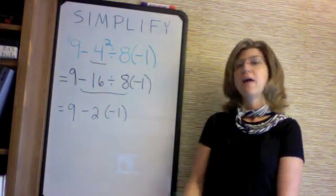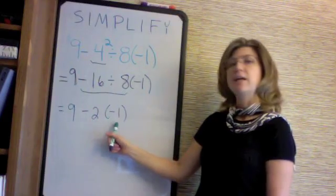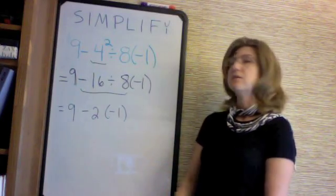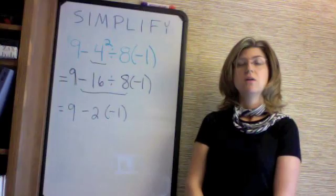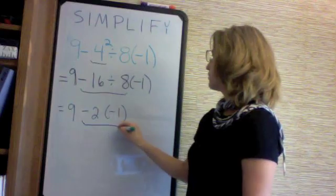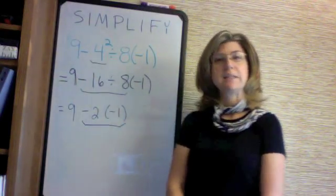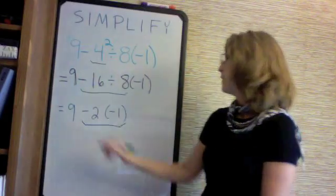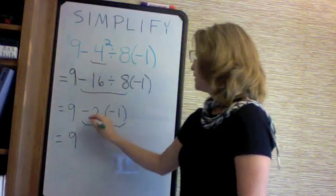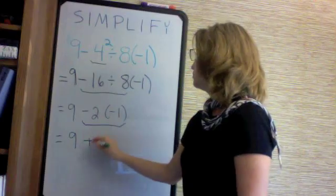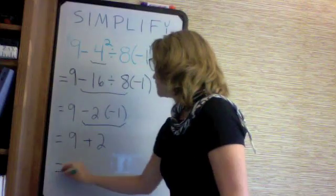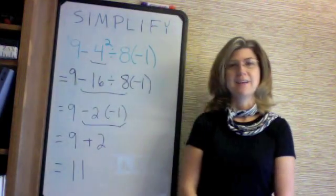Now we have 9 minus 2 times negative 1. We will not do the subtraction first, because the order of operations requires that we do multiplication first. It is only by following the order of operations that we can ensure getting the same correct answer each time. This equals 9 minus negative 2, which is 9 plus 2. And 9 plus 2 is 11. And that is the answer.